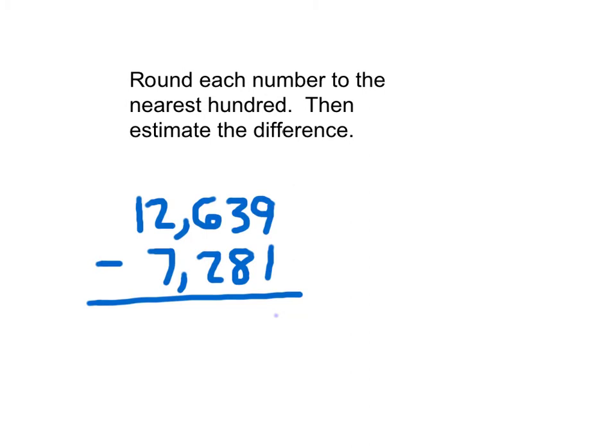Here the instructions say to round each number to the nearest hundred, then estimate the difference. I'm actually going to do the exact answer this time to use the estimate to see if my answer is reasonable. 3 minus 8 can't do it. 6 becomes a 5. 3 becomes 13. 13 minus 8 is 5. 5 minus 2 is 3. And 12 minus 7 is 5. This here again is our exact answer.